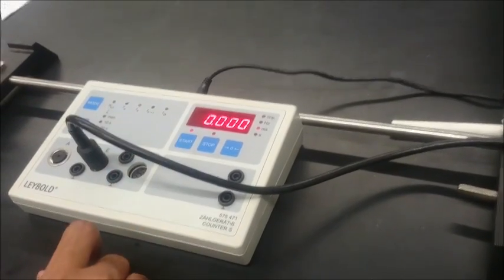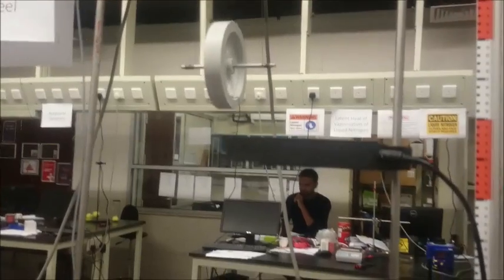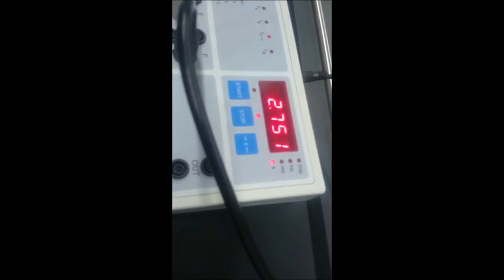Press start. Release the wheel. As the wheel passes the light barrier, the time delta T is measured. Note down the time delta T. Repeat the experiment for different heights.